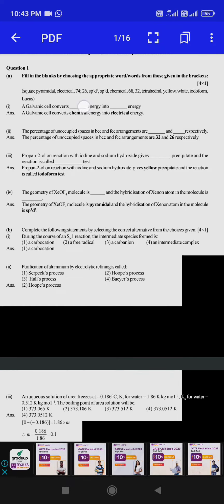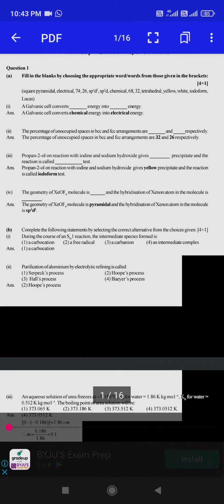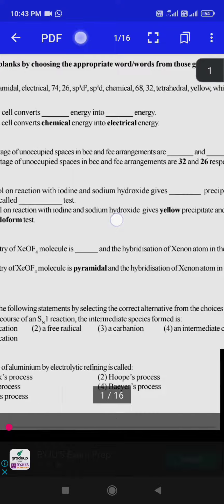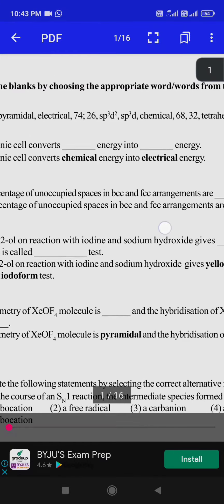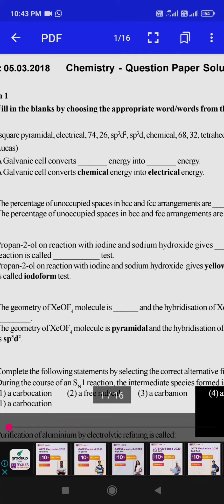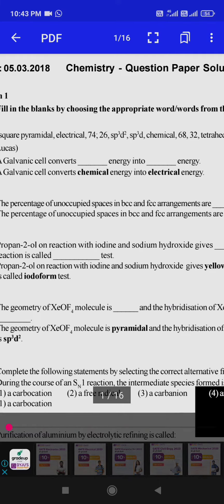First question: a galvanic cell converts energy to energy. The answer is chemical energy into electrical energy. A galvanic cell is a device which converts chemical energy into electrical energy.